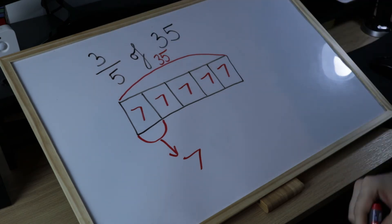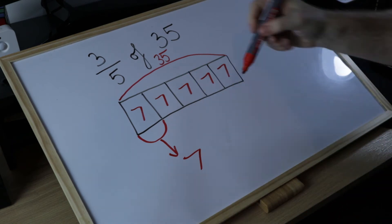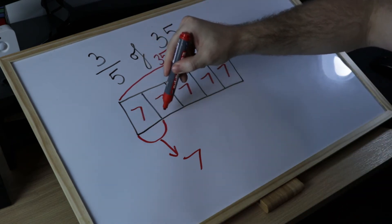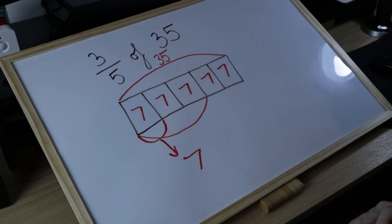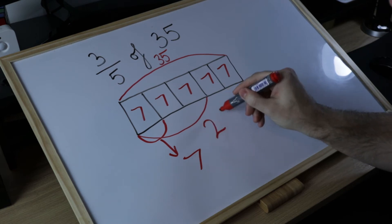If this is the case, the steps are identical. It's just that this time instead of finding one-fifth at the end, we'll have to find three-fifths, and three lots of seven is 21.